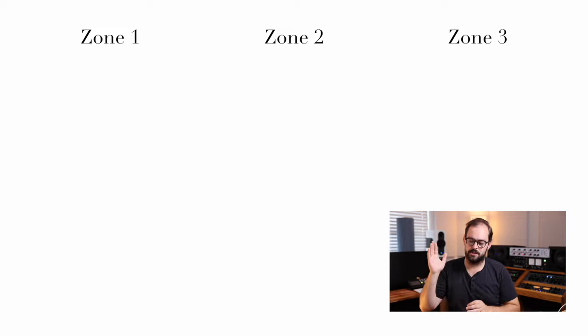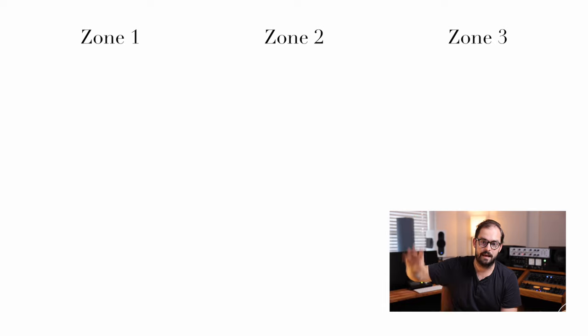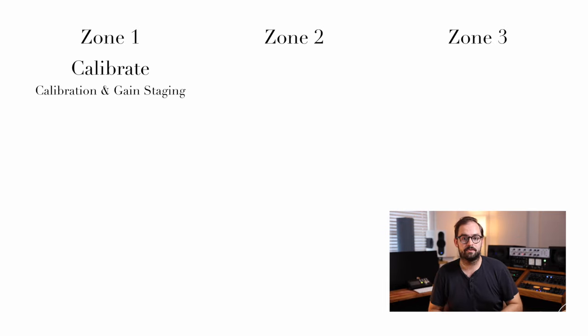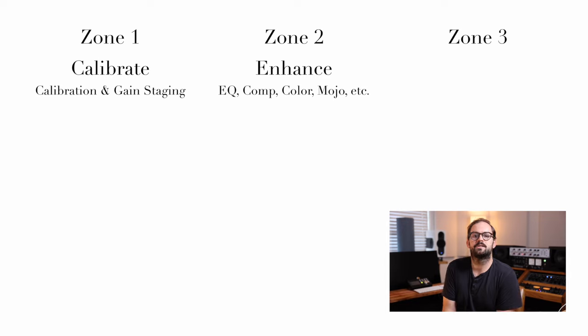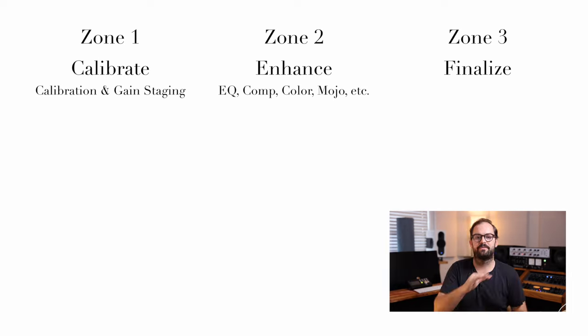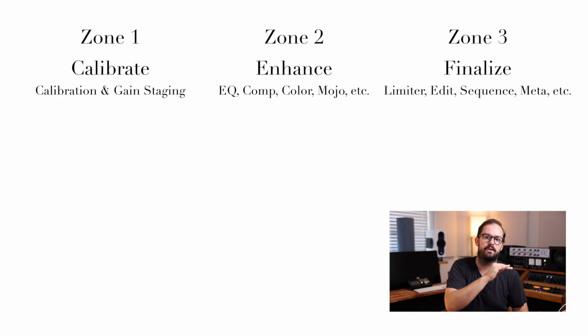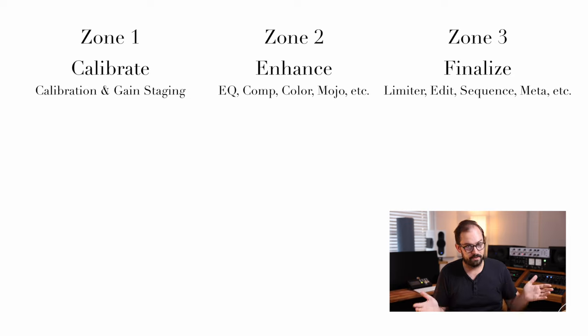For all of this to make sense, I have to give you the short short version of the evolution of the mastering signal chain. Let's start by picturing three zones: zone one, zone two, zone three. Each one of these zones has traditional techniques and procedures. We'll call zone one the calibrate stage — calibration and gain staging, hitting your gear at its headroom sweet spot. Zone two is the enhance stage: EQ, compression, all that fun stuff that gets romanticized about mastering. In zone three, the finalize stage, you place a final digital limiter and then do your editing, sequencing, metadata, etc.